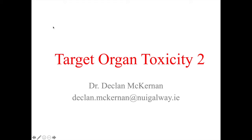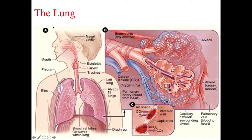Our next lecture in the series will be focusing on the lung. The lung is one of the largest organs in the body. It consists of airways lined with epithelial cells from the pharynx to the alveoli, as it passes through the trachea, bronchi, and bronchioles, as can be seen in the diagram on the left. Breathing is facilitated by muscles like the diaphragm.